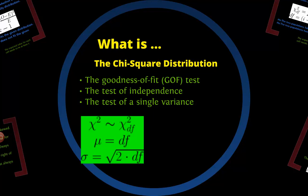We'll be looking at contingency tables. We're going to look to see if the numbers we have fit the distribution — that's the goodness of fit test — and whether two or three rows of data are independent of each other. We're also going to test homogeneity, as well as testing variances.